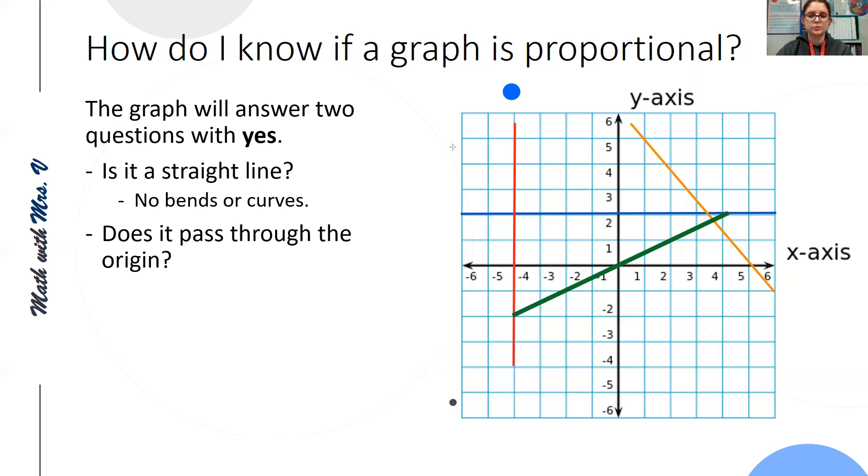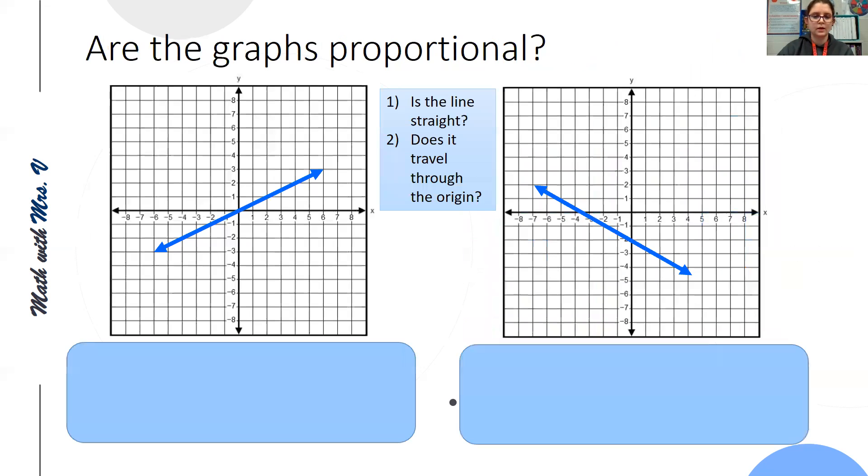So let's look at a few examples. So are these graphs proportional? I've put our two questions up as reminders. Is the line straight? So for question one, for both of them, is the line straight? Yes, I'm going to put a check mark. Yes, this is a straight line. The second one, yes, that is also a straight line. So question two, does it travel through the origin? The origin is where our x and y-axis cross each other. Yes, this travels through the origin, so it is proportional. Here's my origin. This line does not travel through the origin, so it is non-proportional.